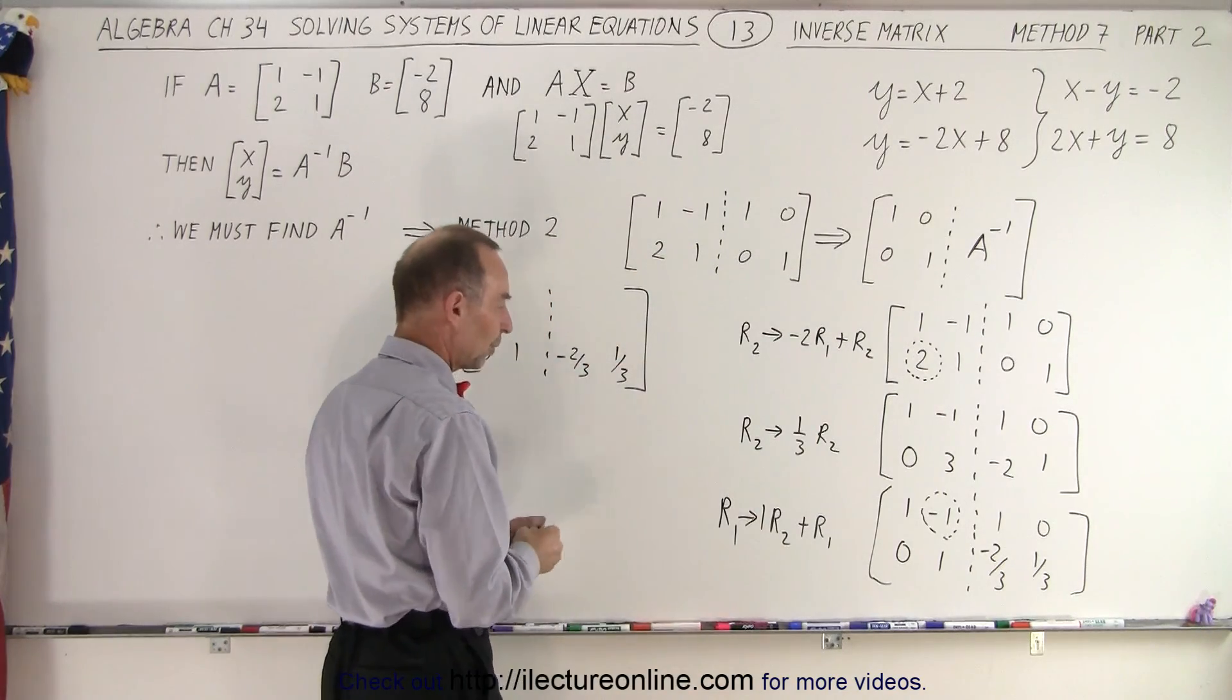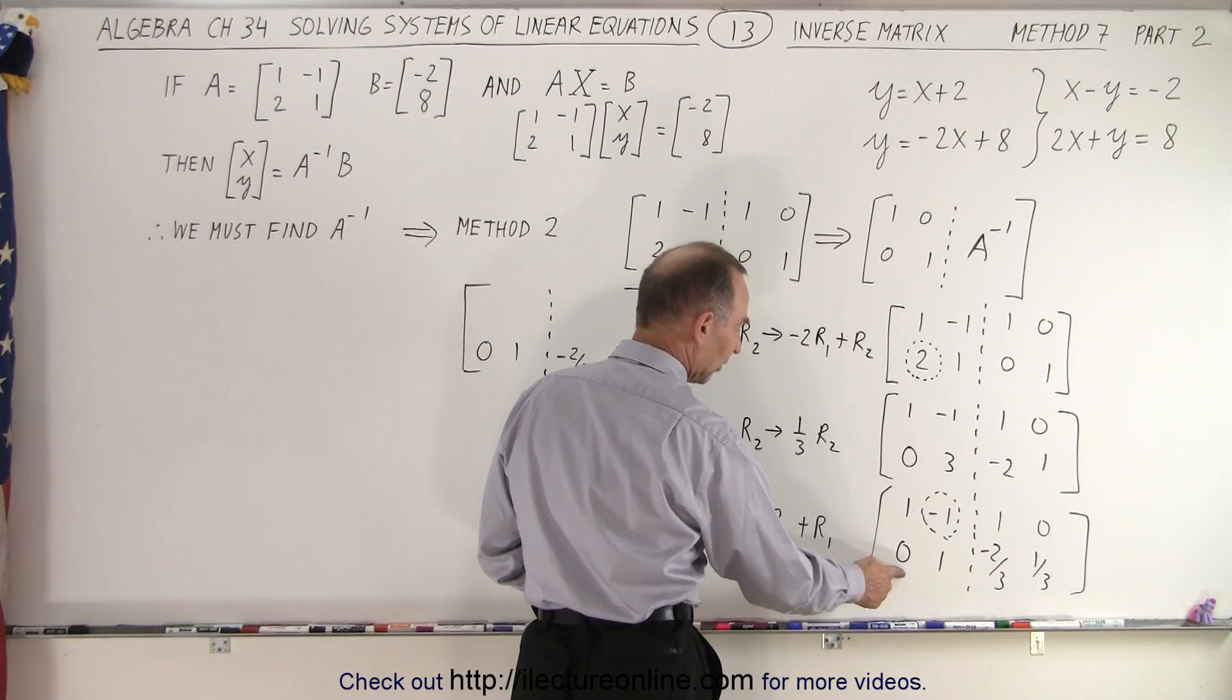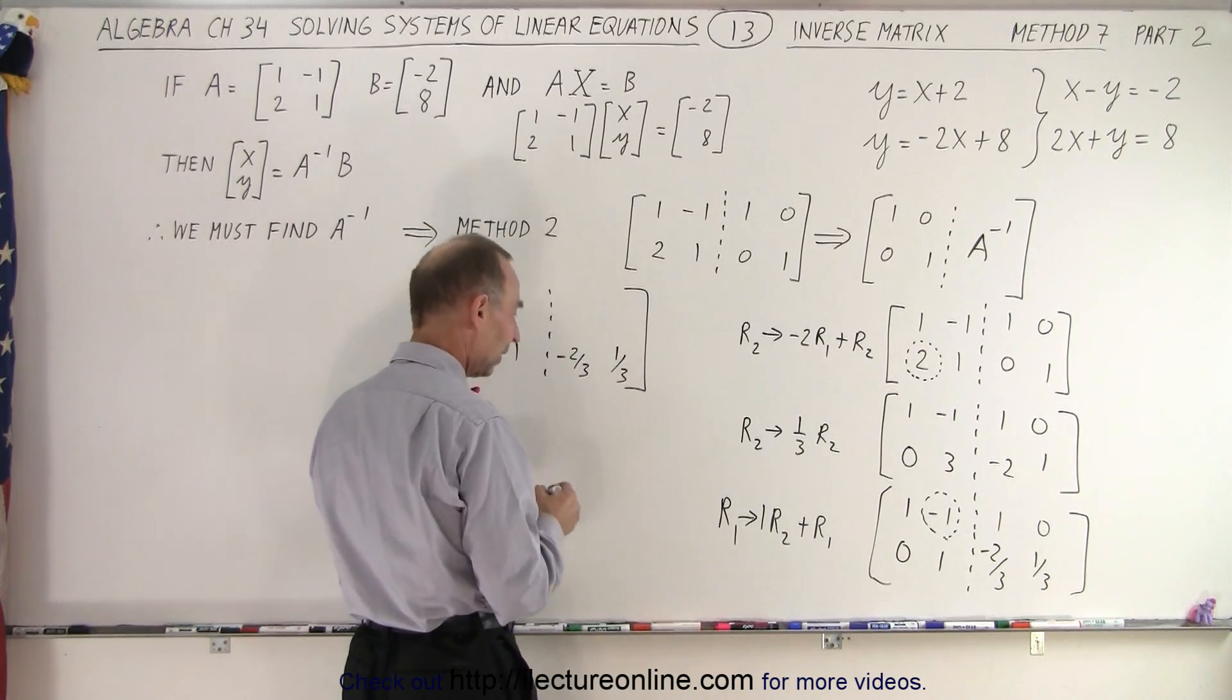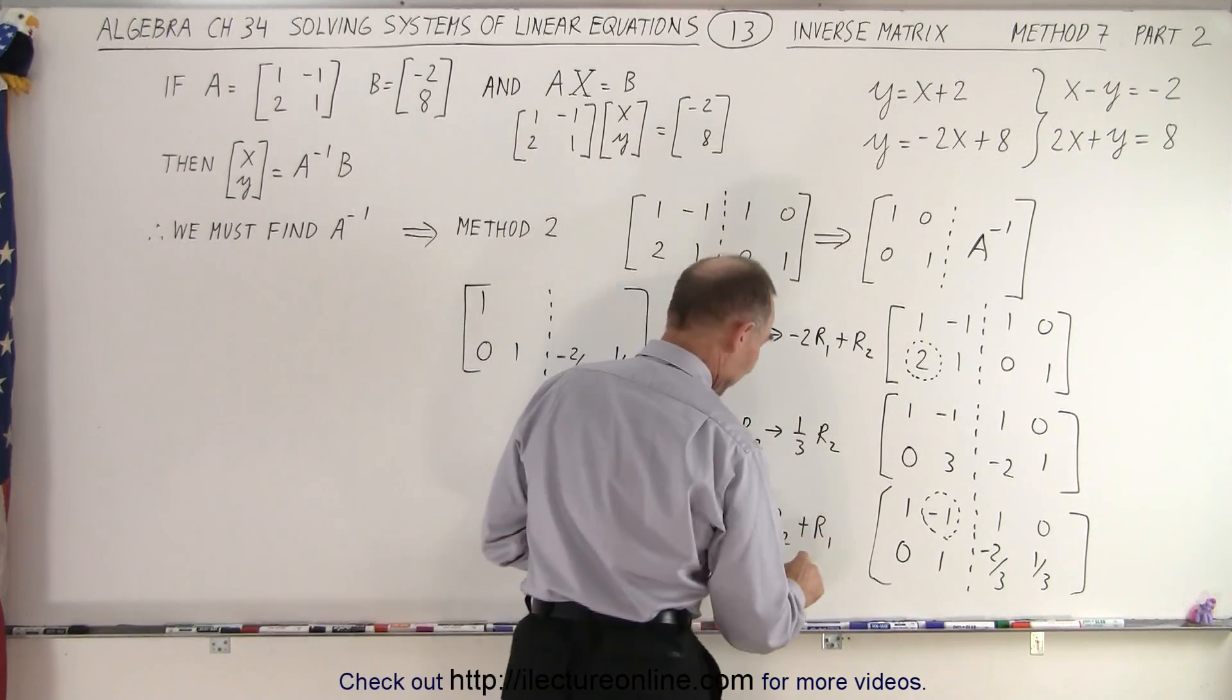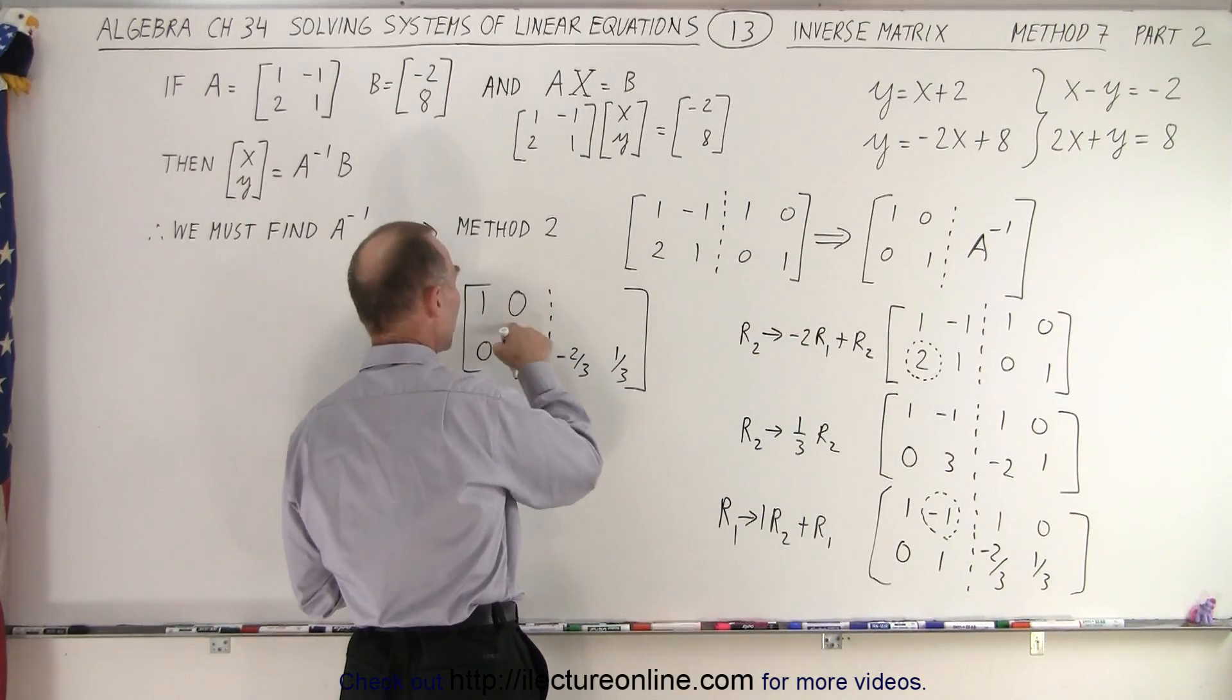Now what we're going to do is we're going to take the first row and we're going to replace about 1 times the second row. So 1 times 0, add it to 1, that's still a 1. So that's correct. Now we have 1 times 1 added to negative 1, gives me 0. That's exactly what we want.